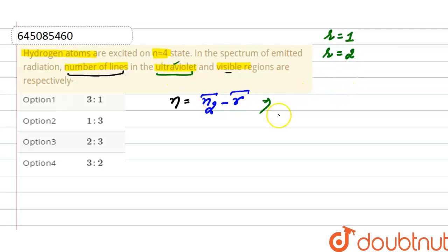We'll calculate for ultraviolet light. The excited state here is 4, and for ultraviolet, the value of r is 1. So the number of spectral lines here is 3. Moving on to the number of spectral lines